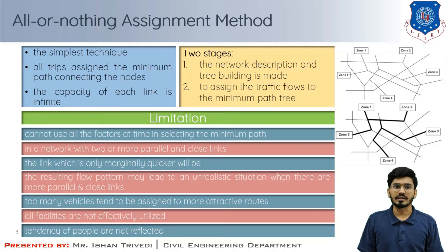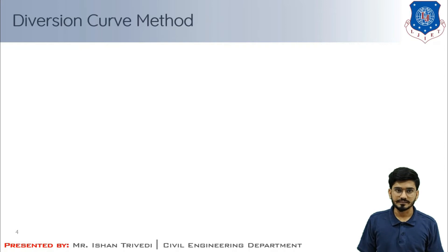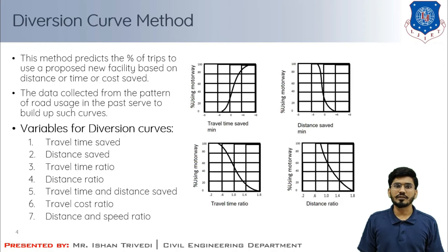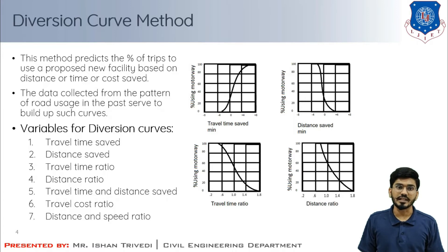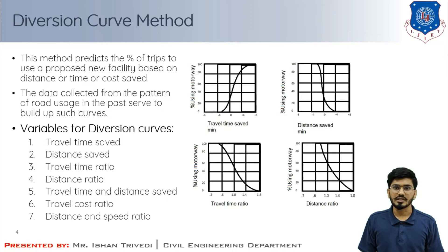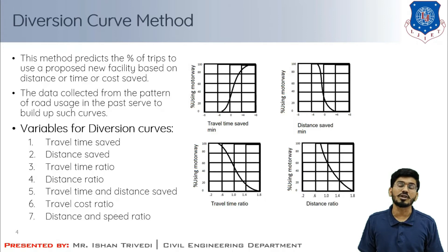Now we understand the second method: the diversion curve method. The diversion curve method is one of the frequently used assignment techniques for route assignment. This method predicts the percentage of trips likely to use a proposed new facility such as a bypass, new expressway, or new arterial streets in the city area, based on distance saved, time saved, or cost saved. Data collected from past patterns of road usage serve to build up such curves.